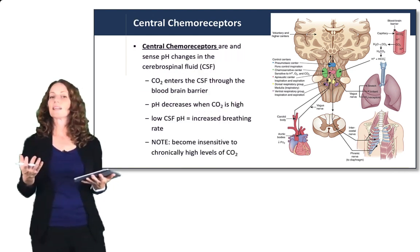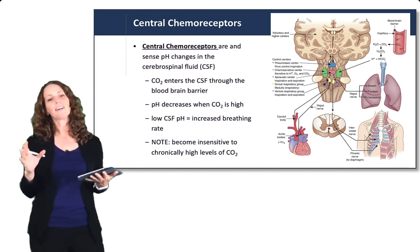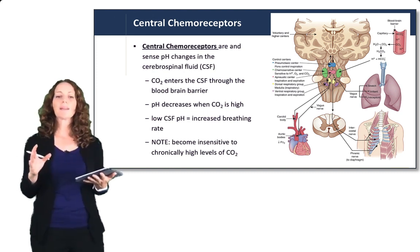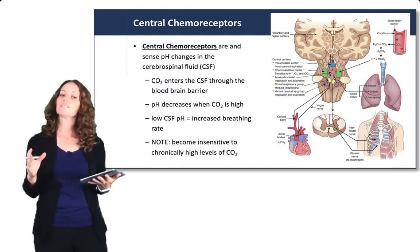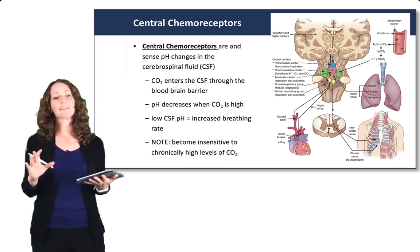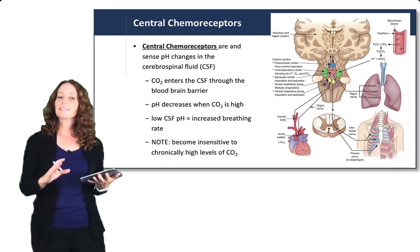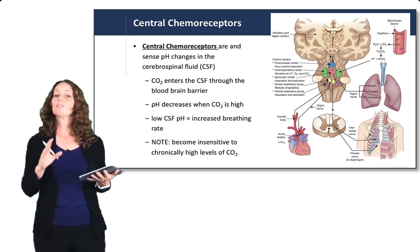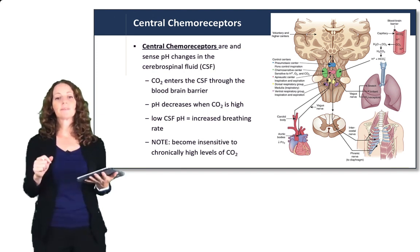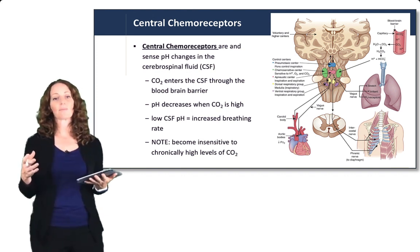Central chemoreceptors are also sensitive to pH — specifically the pH of the cerebrospinal fluid (CSF). CO2 will enter the CSF because the blood-brain barrier allows gases to diffuse. When CO2 enters the CSF, the pH of the CSF will go down. That low CSF pH is sensed by the central chemoreceptors, directly related to carbon dioxide levels, which then sends a signal to the brain stem to increase breathing rate.